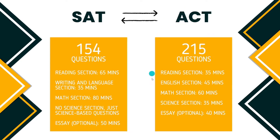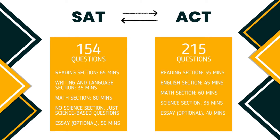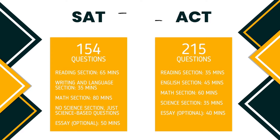The ACT English section consists of 75 multiple choice questions. You will have 45 minutes to answer questions on grammar, punctuation, sentence structure, and rhetorical skills. There isn't really anything you need to memorize, but it'd be best to brush up on subject-verb agreement, pronoun agreement, adjectives and adverbs, comparisons and superlatives, punctuation, and conjunctions. Just remember that good writing should be clear, consistent, concise, and in complete sentences.